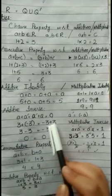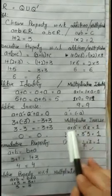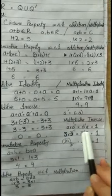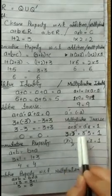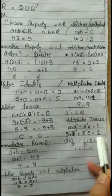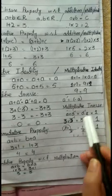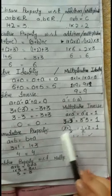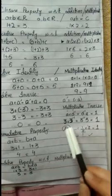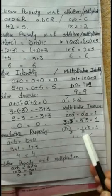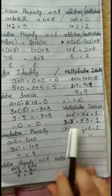Solving the left hand side: 3 plus (minus 3) equals 0. Right hand side: minus 3 plus 3 equals 0. Now the multiplicative inverse: a into a inverse equals a inverse into a equals 1. For example, 3 into 3 inverse equals 3 inverse into 3 equals 1. Since 3 inverse equals 1 over 3, we get 3 into (1/3) equals 1, and 3 and 3 cancel, leaving only 1.